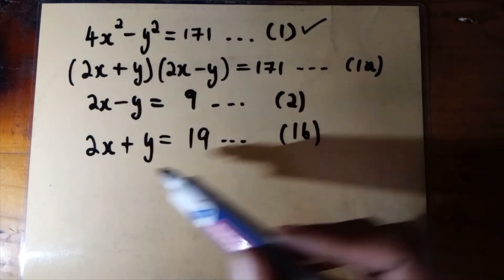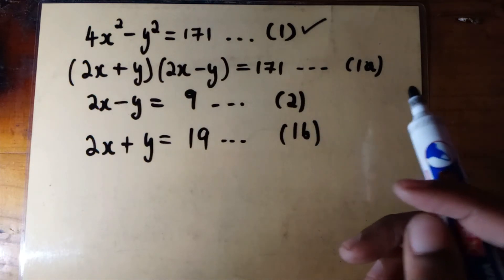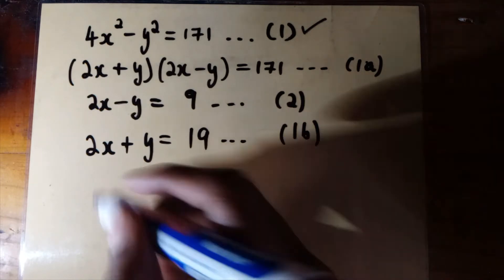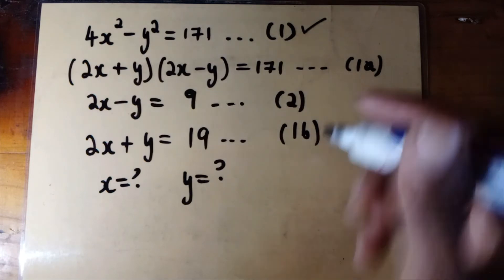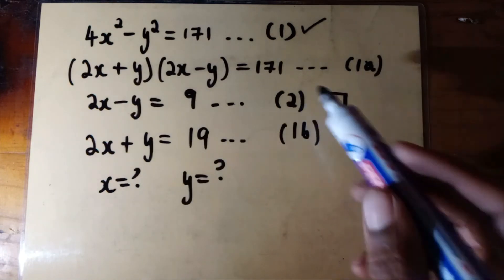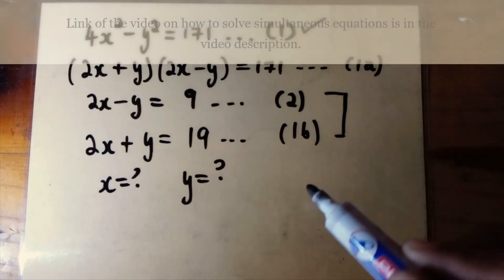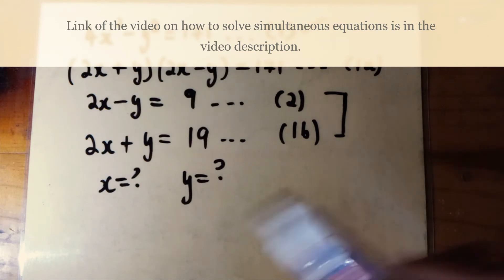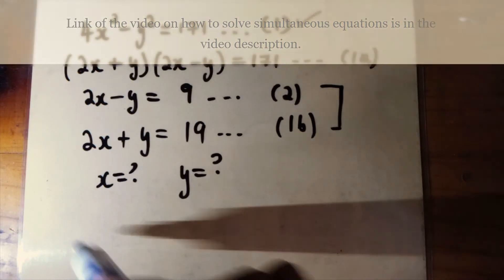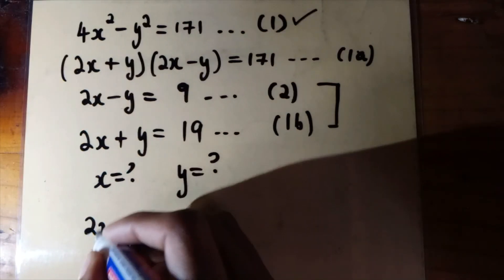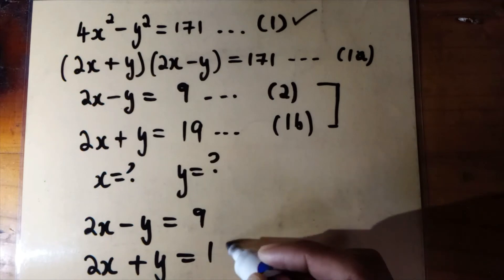We have found that 2x plus y equals 19, and we call this equation 1b. Our next step is to find the individual values of x and y. We will use equation 2 (2x minus y = 9) and equation 1b (2x plus y = 19) and solve them simultaneously using the elimination method.